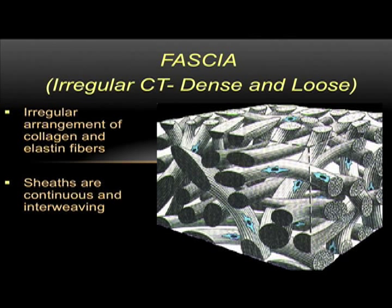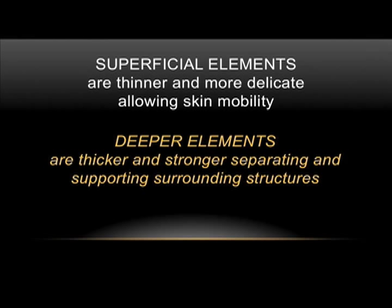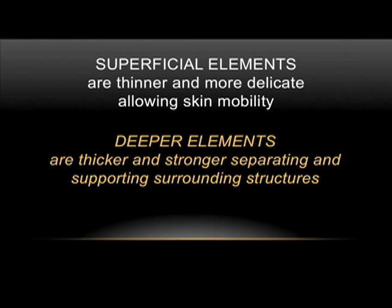Now we're looking at fascia — irregular connective tissue — which includes dense and loose connective tissues. The course emphasis is on the evaluation and treatment of irregular connective tissue composed of irregular sheaths of collagen and elastin fibers. These fascial sheaths are continuous with each other, interweaving and enveloping all structures from the basement membrane of the dermis to the periosteum of the bone. Looking at an electron microscopic picture, you can note the irregular weave — almost like a Rastafarian hairdo. Superficial elements are thinner and more delicate, allowing skin mobility, while deeper elements are thicker and stronger. Parallel sheaths of fibers at angles to each other provide greater strength and extensibility.